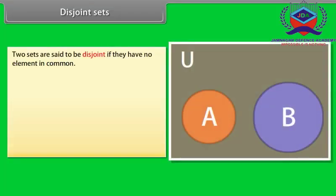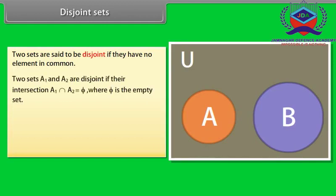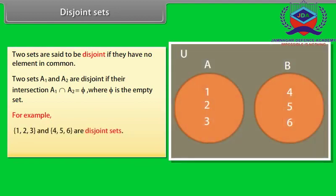Disjoint sets. Two sets are said to be disjoint if they have no element in common. Or we can say that two sets A1 and A2 are disjoint if their intersection is phi, the empty set. For example, {1, 2, 3} and {4, 5, 6} are disjoint sets. The sets of alive and dead people are disjoint. Disjoint sets can be represented by means of a Venn diagram as shown.